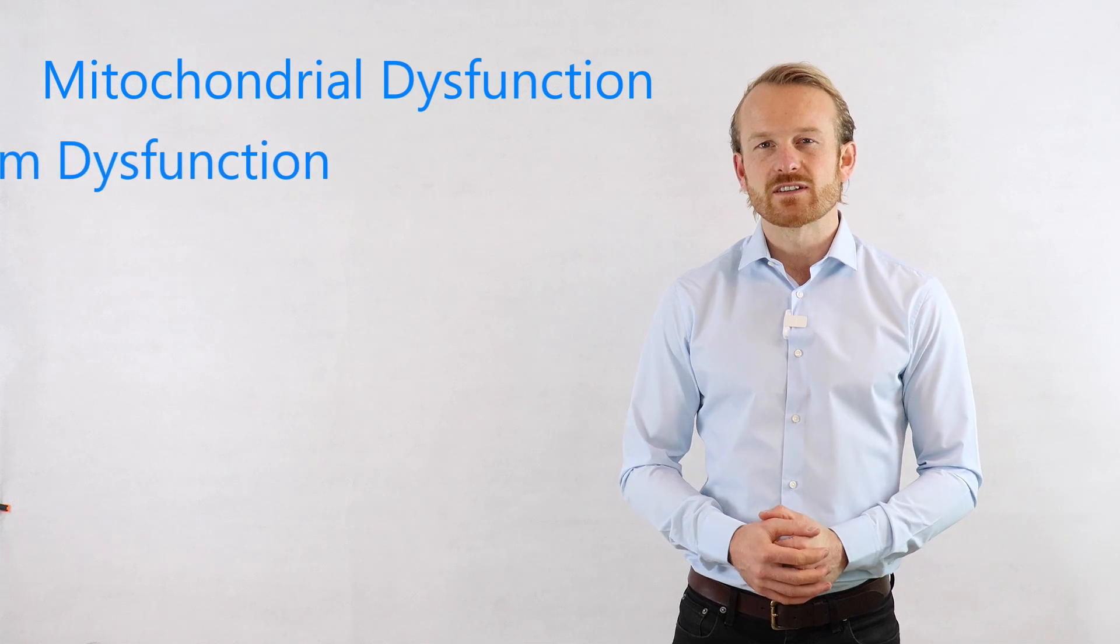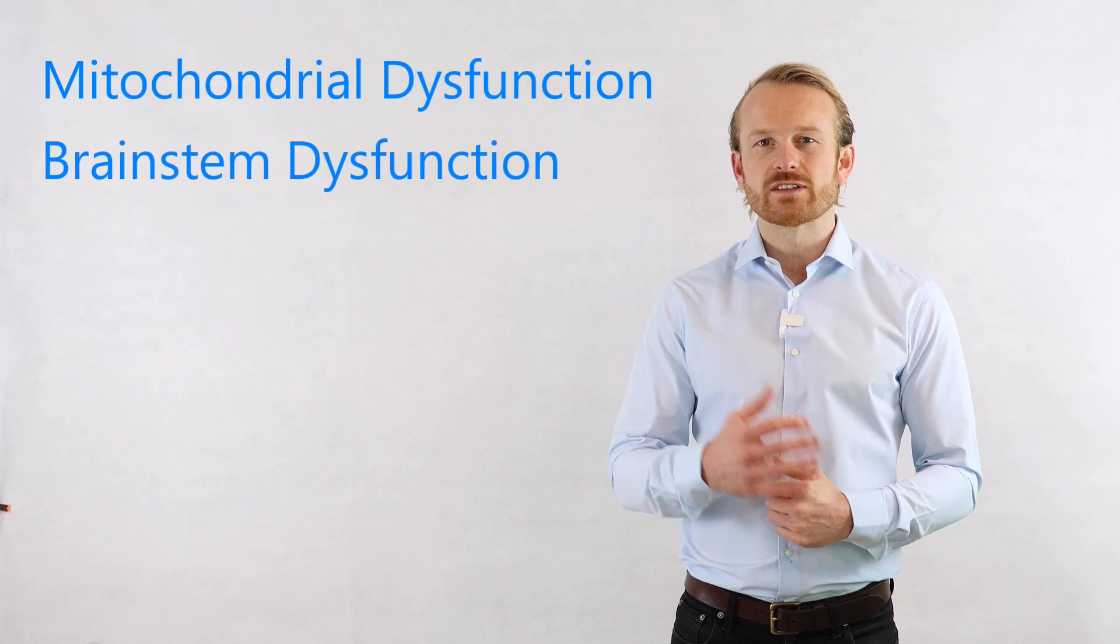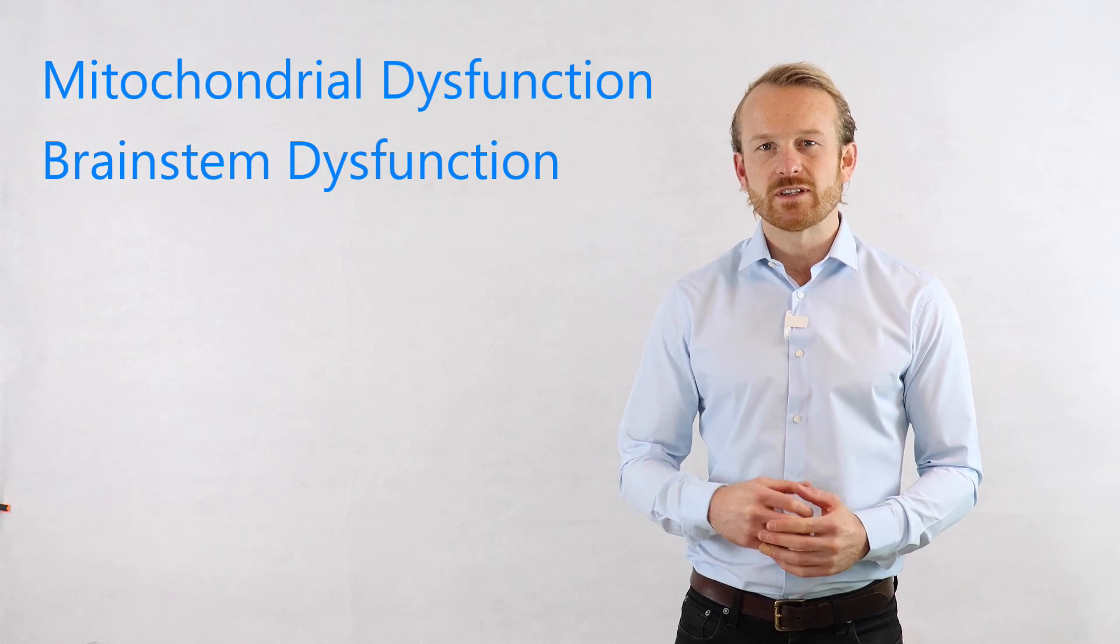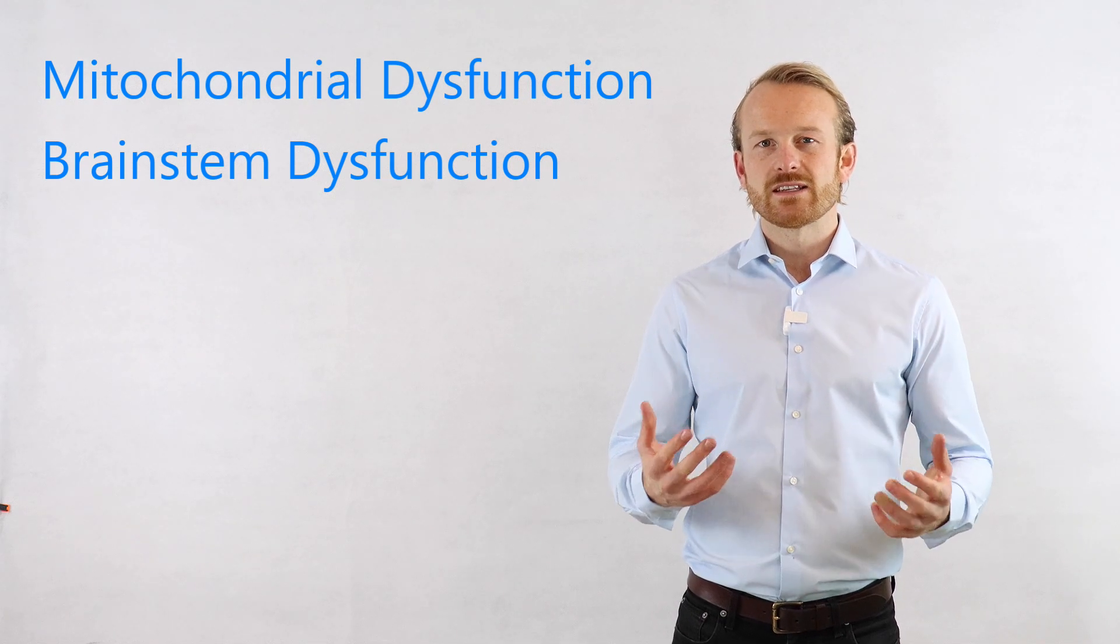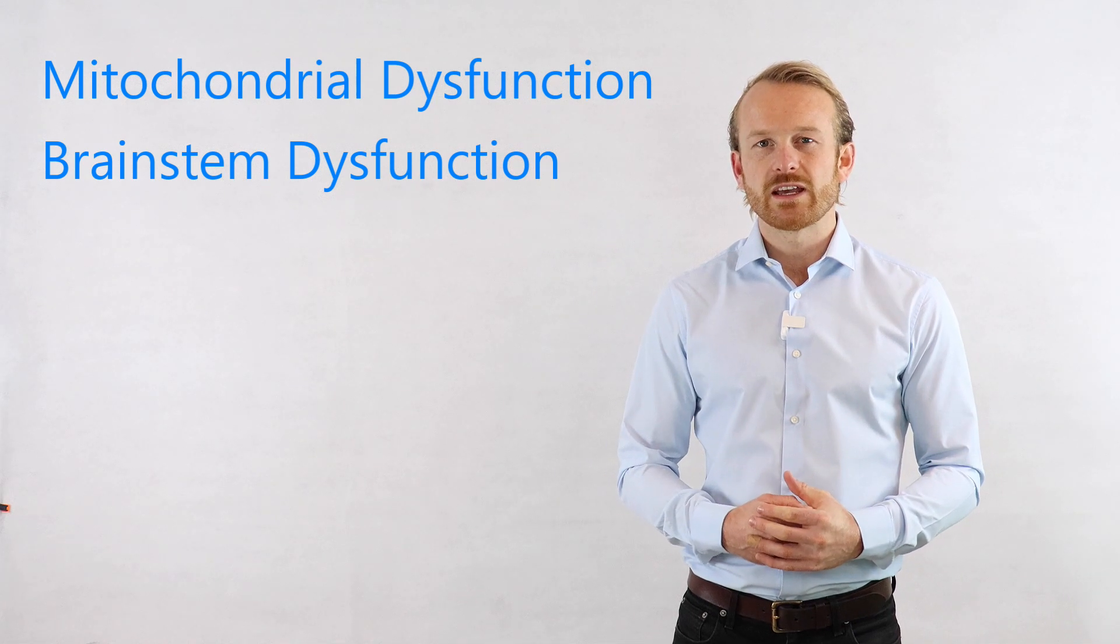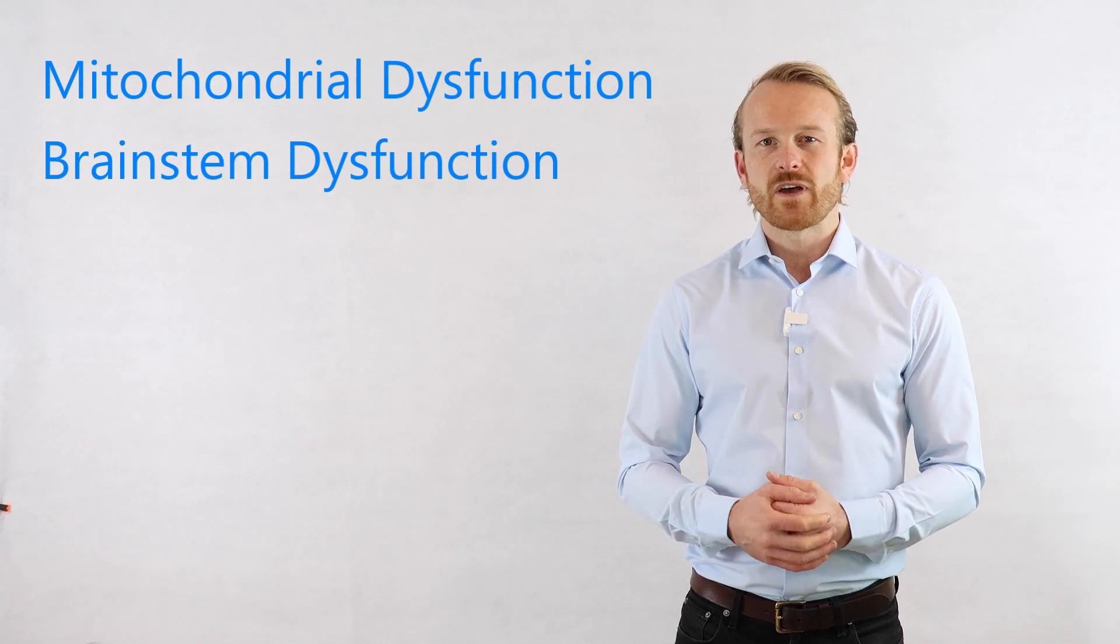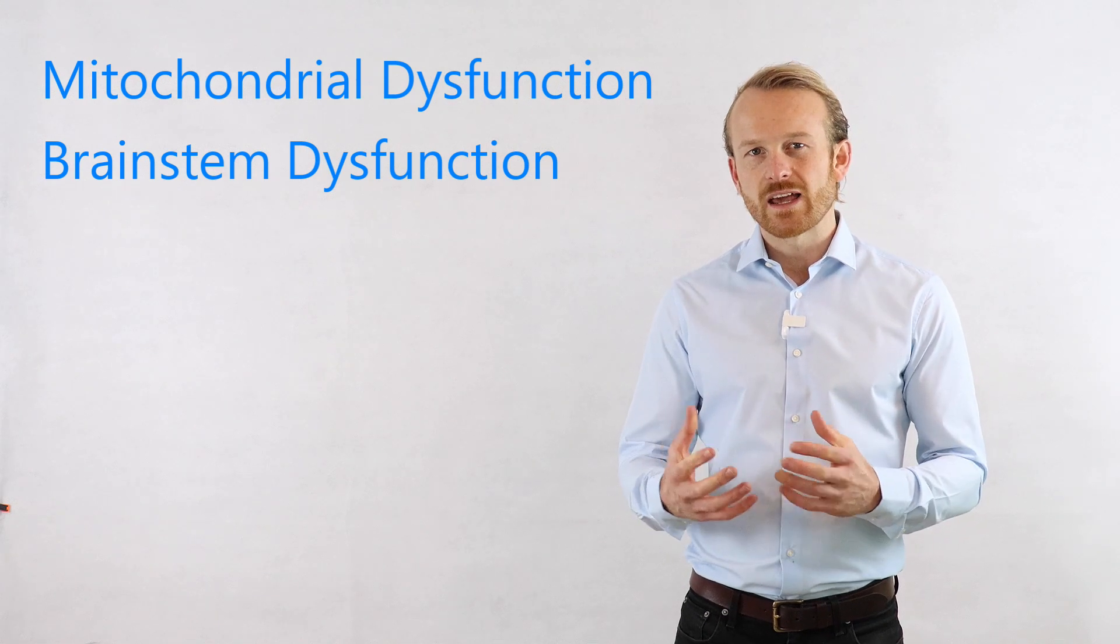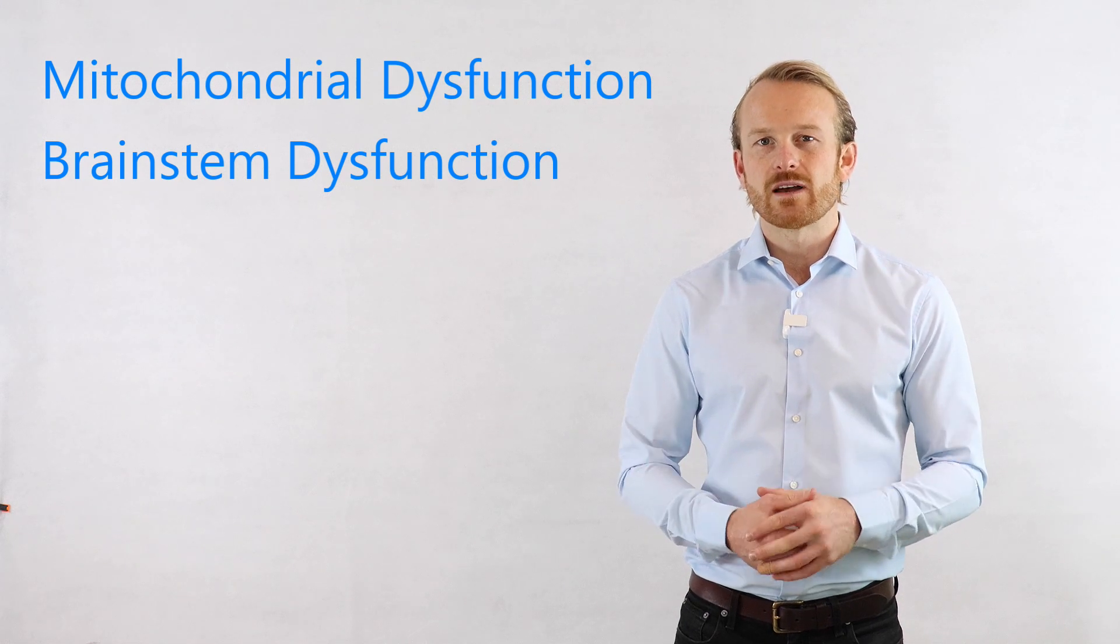Another theory is brainstem dysfunction. This theory hypothesizes that the brainstem has undergone damage. And this is because of the relatively high expression of ACE2 receptors in the brainstem, and also the fact that it's very susceptible to damage from systemic inflammation. This area of the brain is responsible for taking care of breathing, cardiac function, digestion, and neurological function. And this makes sense why some people are experiencing POTS-like symptoms, heart palpitations, breathing difficulties, and digestive upset.